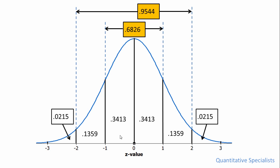So there's 2.15% of the values that occur from 2 to 3 standard deviations above the mean, and the same 2.15% of the values occur from negative 2 to negative 3 standard deviations below the mean.